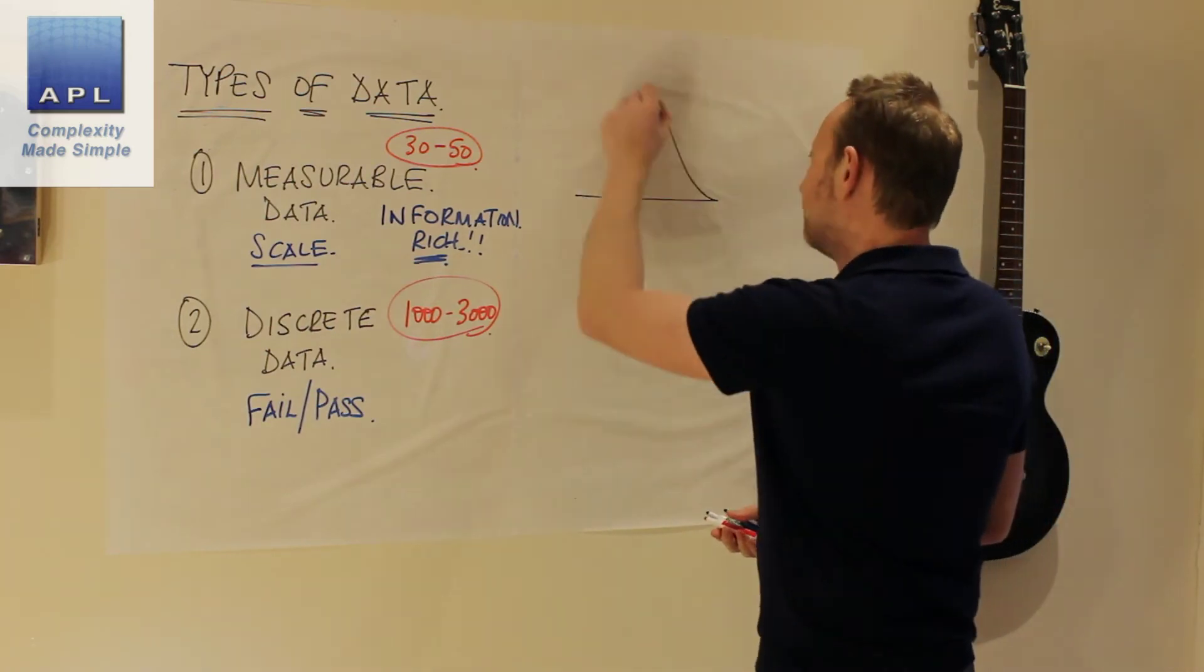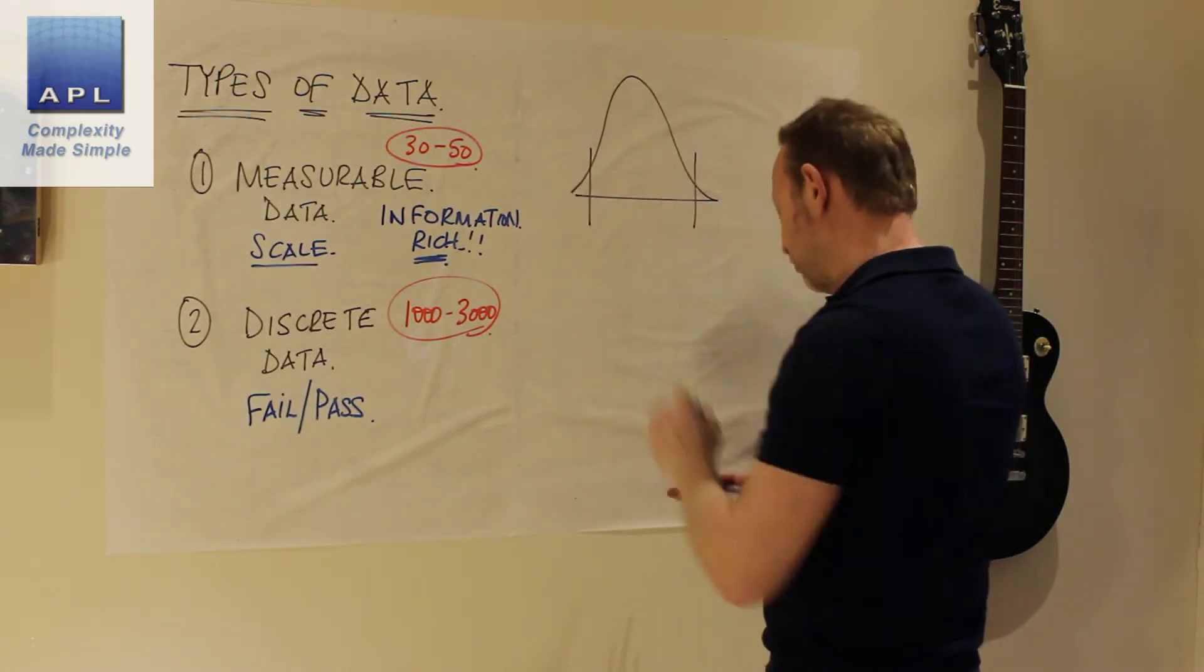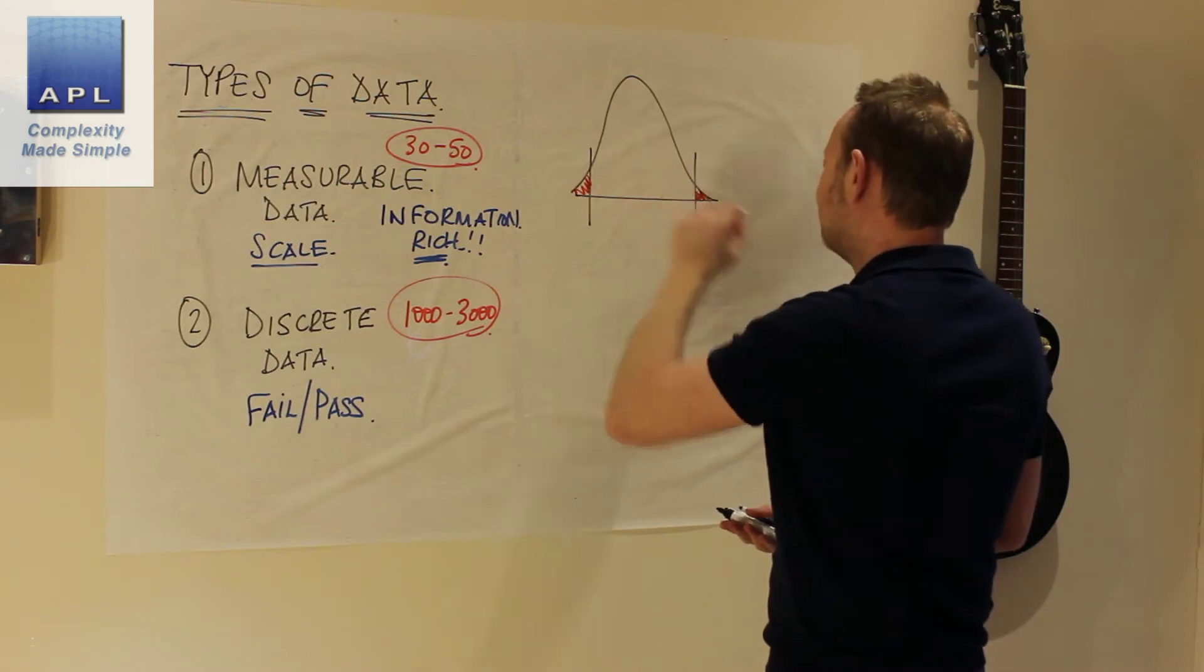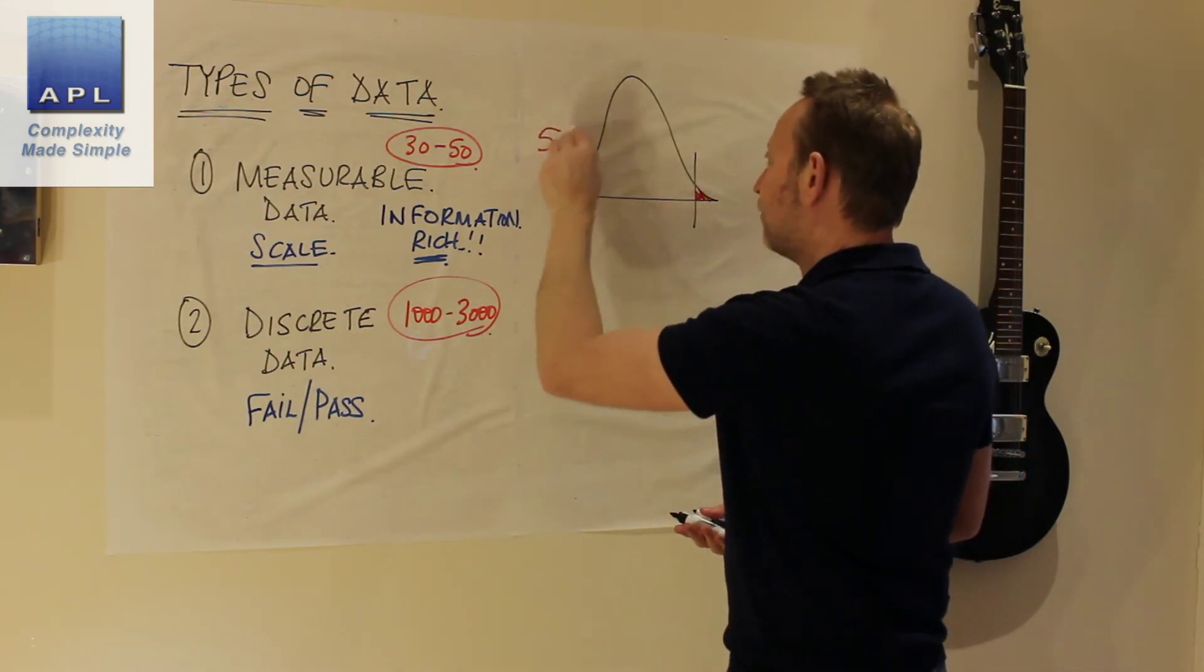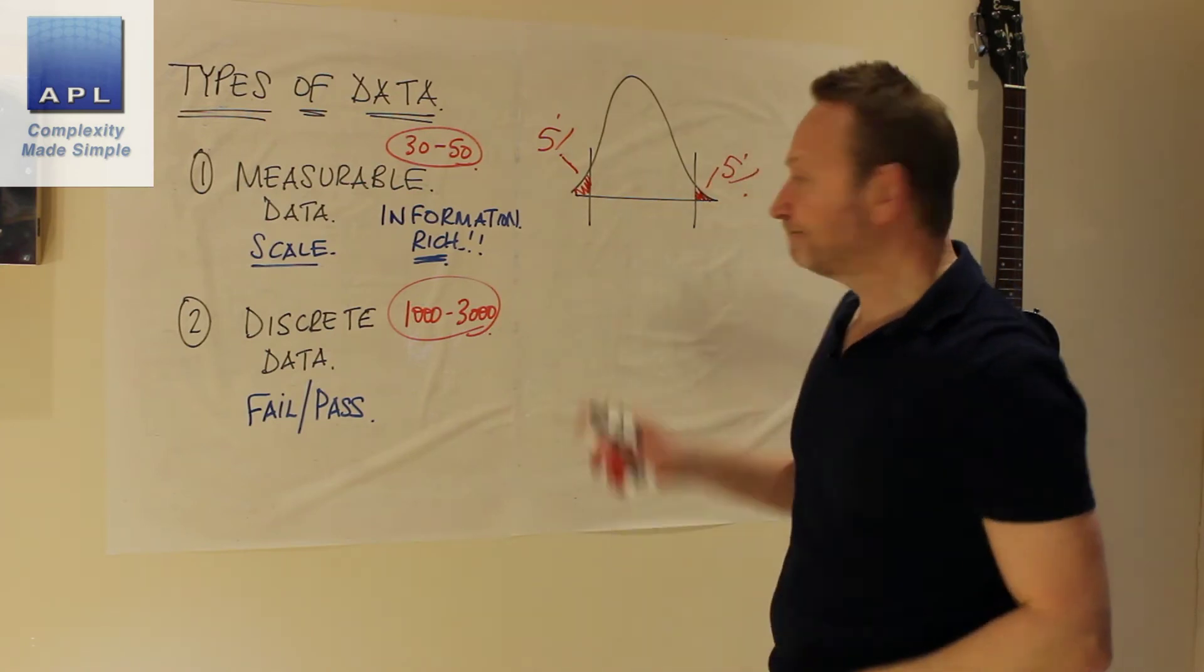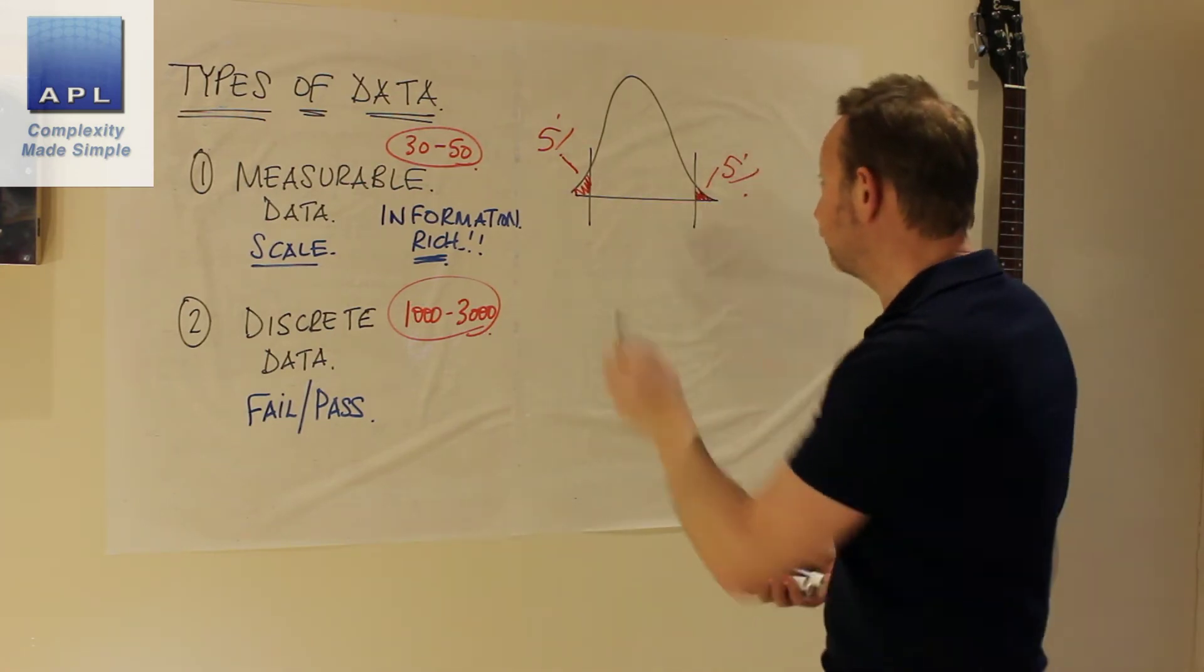Imagine, let's draw a picture. You go to a problem, you measure it. Problem looks like this. Let's say there's 5% in each tail. What have you got to do to fix that?